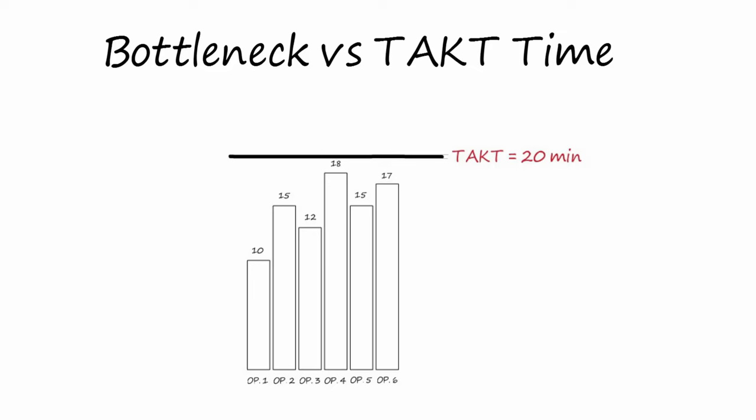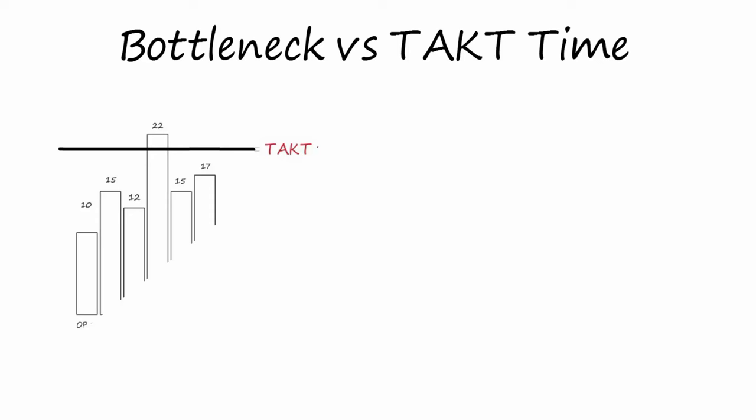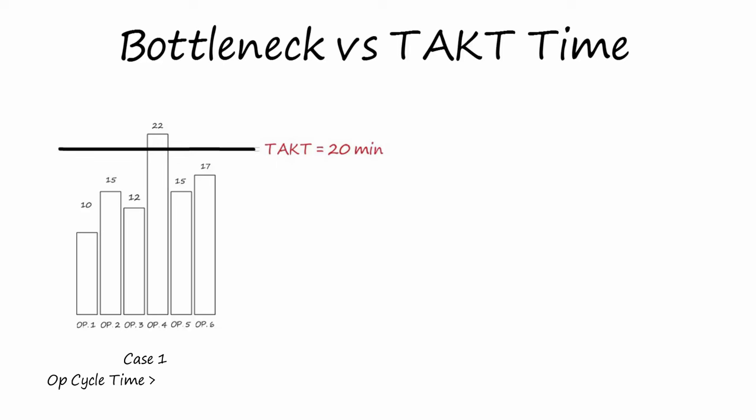A bottleneck or constraint in a supply chain is the resource that requires the longest time in operations. For a certain demand, a bottleneck paces the speed of the production and it can impact or not customer demand. In case one, you can see in the graph that station four is the bottleneck of our process with 22 minutes.